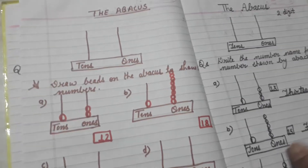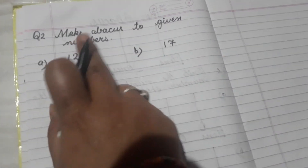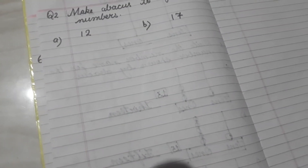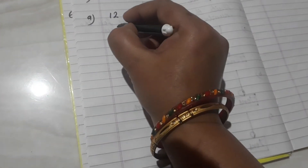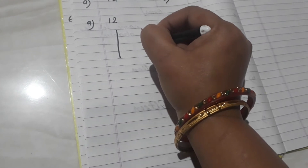Now we will start our next question. Just look — read this question: make an abacus for the given numbers. What we have to do? We have to represent these numbers on the abacus. For the abacus, we draw two vertical lines and one horizontal line.